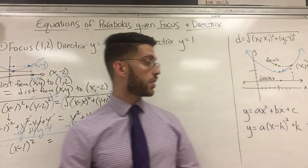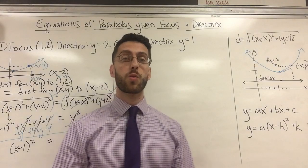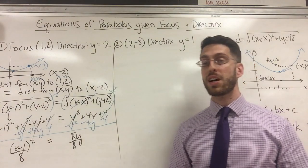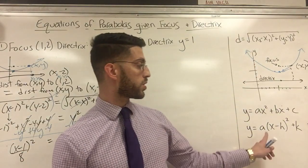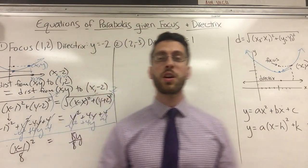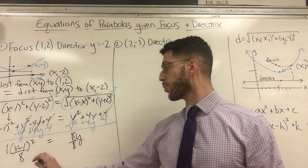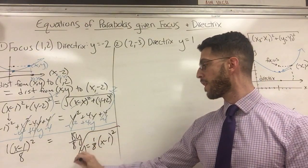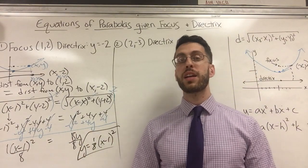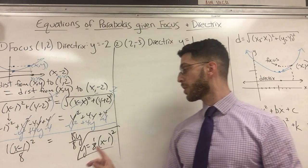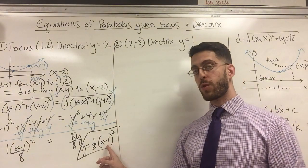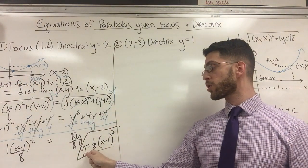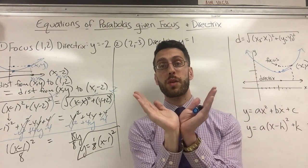My goal is to isolate y, so divide both sides by 8. The equation becomes y = (1/8)(x − 1)². That's the equation in vertex form. The vertex is (1, 0) — positive 1, since the sign switches — which we already knew. The coefficient 1/8 is a fraction, which means the parabola is wide.